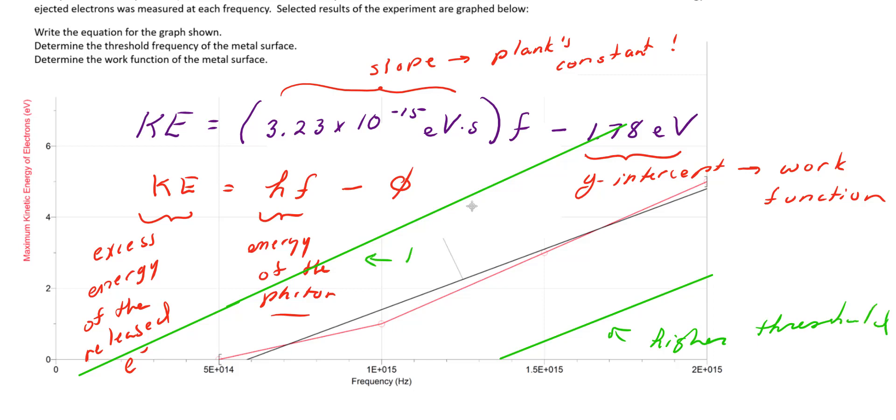The one to the right has a higher threshold frequency. The one to the left has a lower threshold frequency. A higher threshold frequency means it also has a larger work function. It takes more energy to kick those electrons out of the atom. The lower threshold frequency means it has a lower work function. It takes less energy to kick those electrons out of their atom.